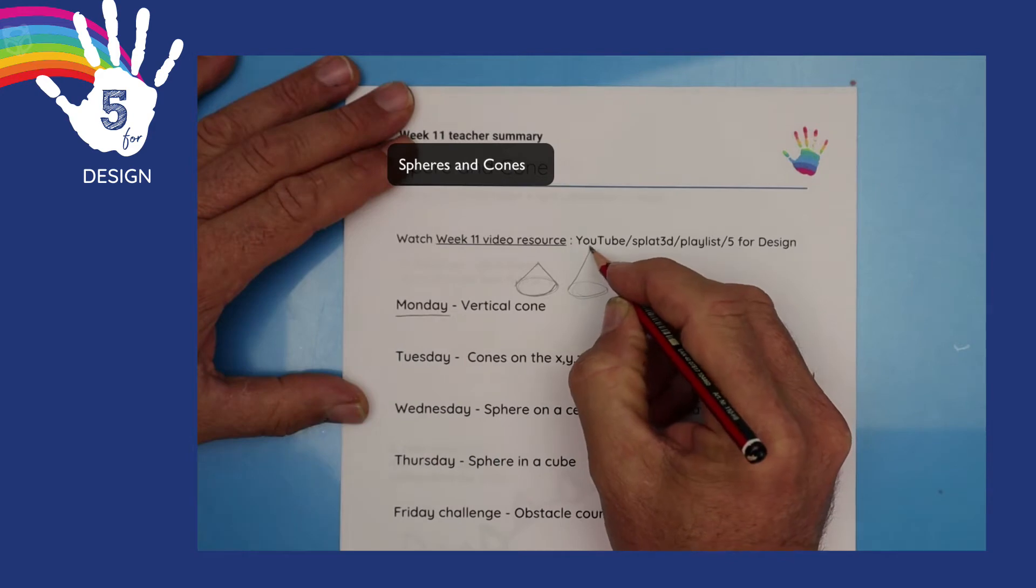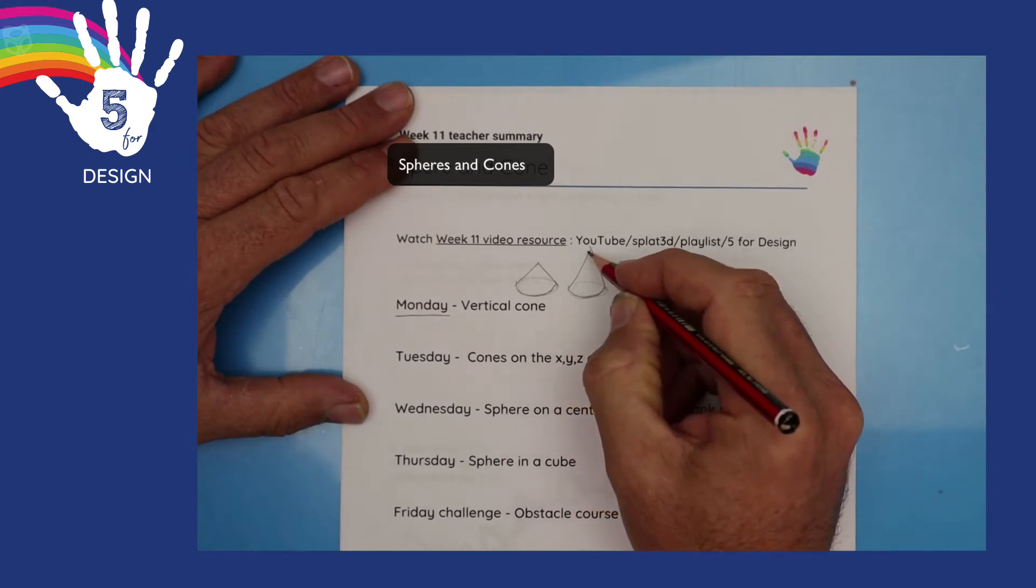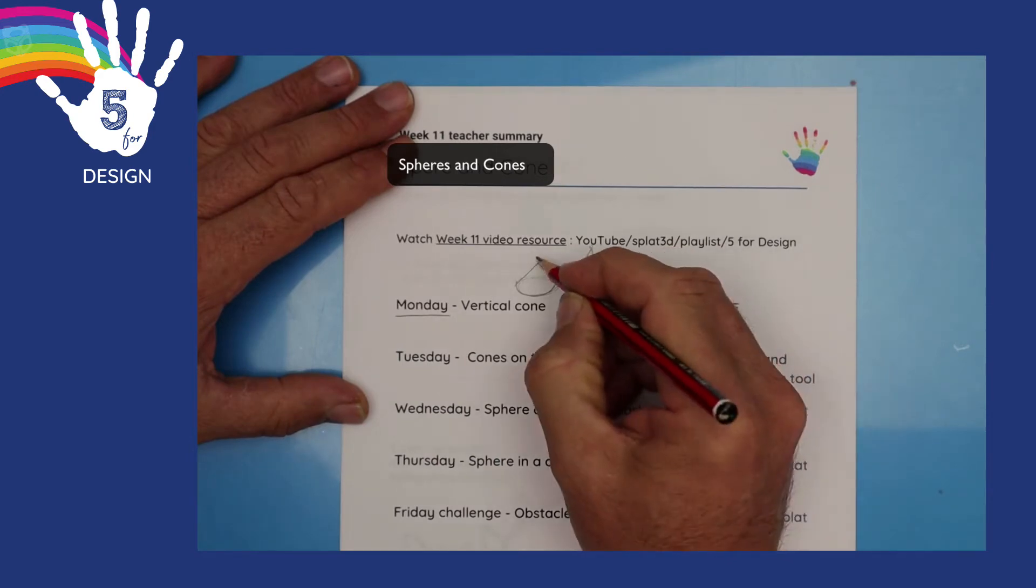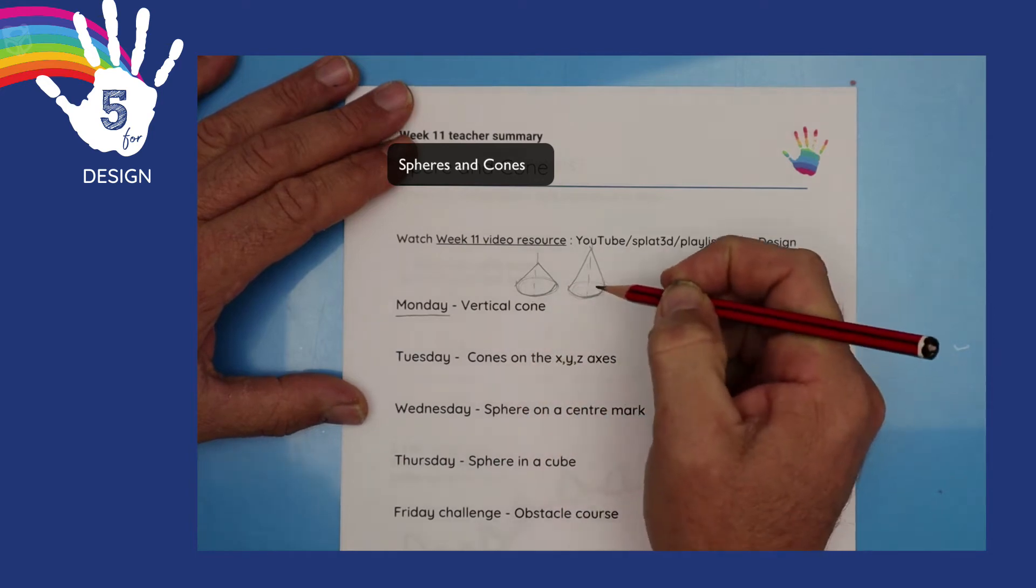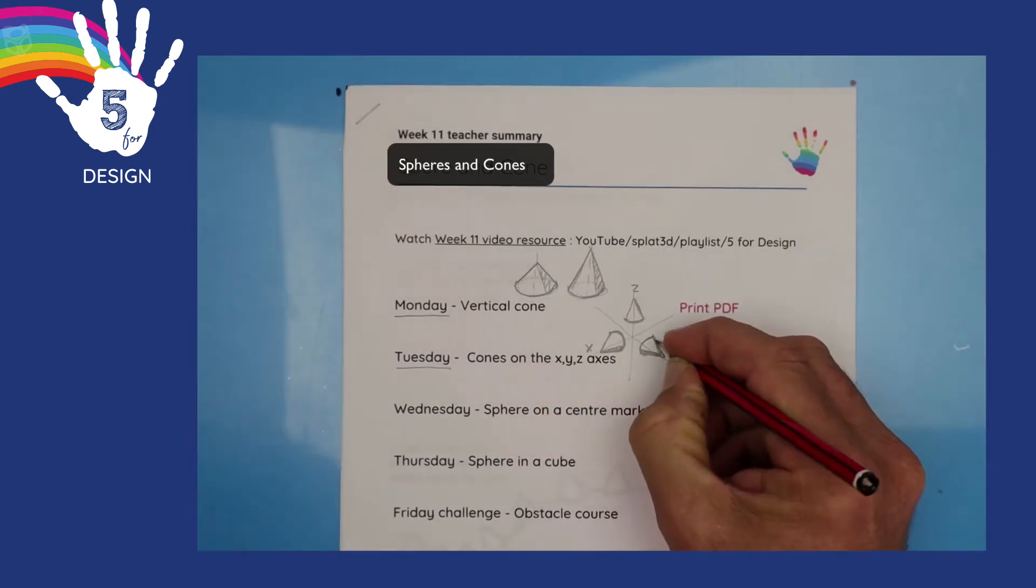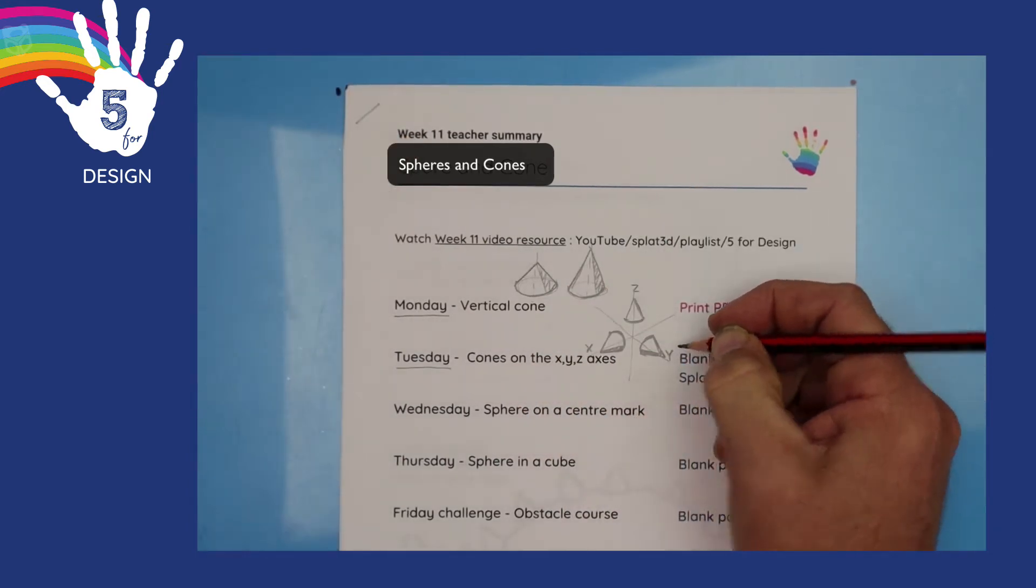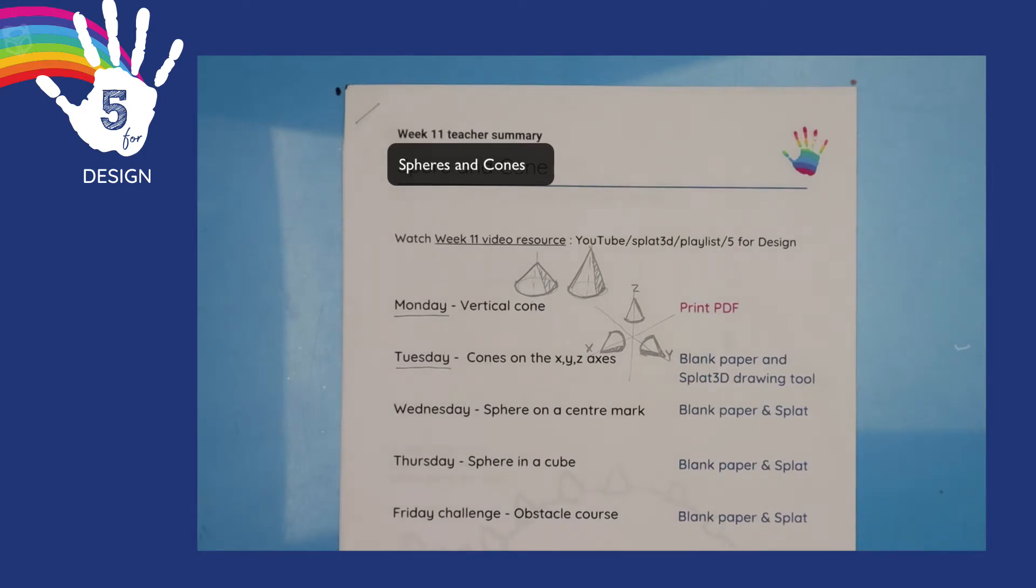On Monday, we begin by drawing cones of different heights, and we're drawing them straight up and down, or in the Z axis. On Tuesday, we draw cones along not only the Z, but the X and Y axes as well.